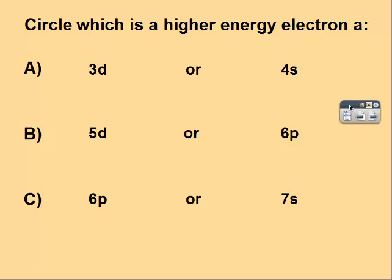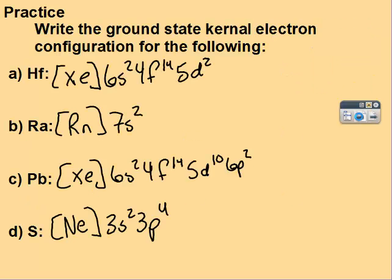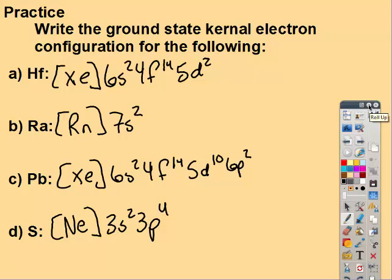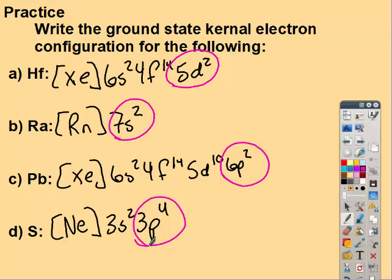To figure out which electron is the highest energy, you're going to look for the one that filled last. Looking back at the last four that we did, that's the highest in energy.